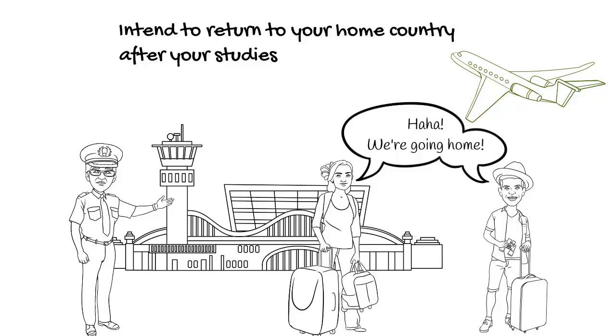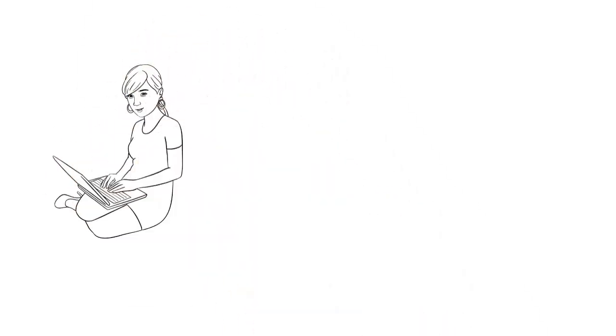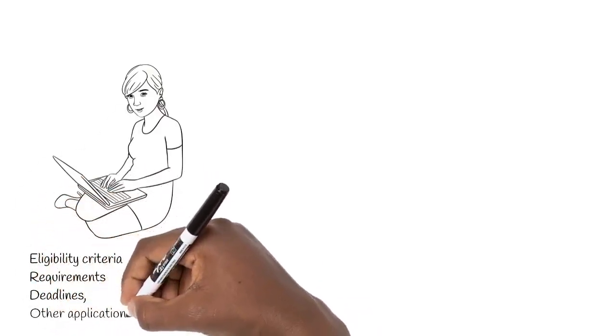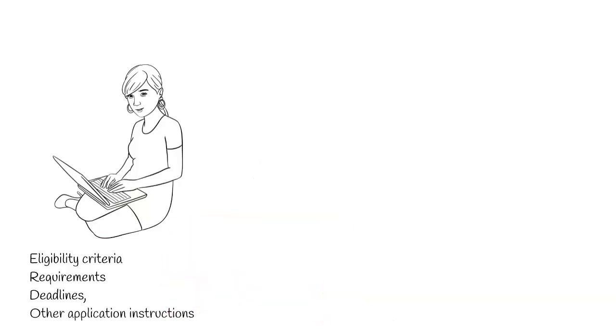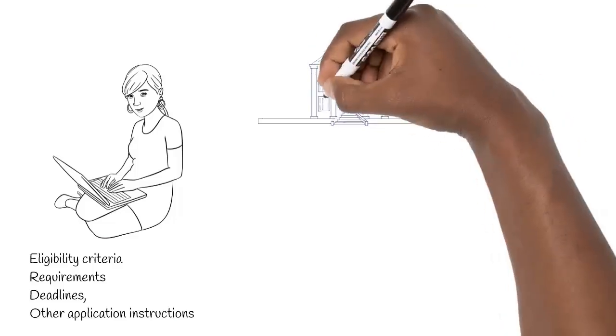If you meet all those criteria, follow this step before you apply for the program. Carefully research the program website of the university of your choice to learn the specific details about eligibility criteria, requirements, deadlines, and other application instructions. Select the institution and program you want to apply to.